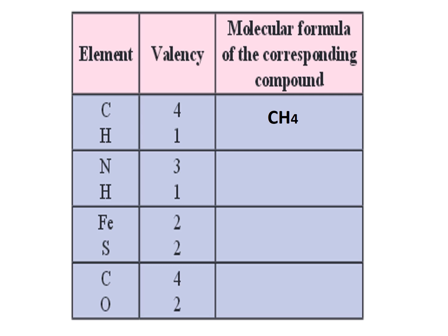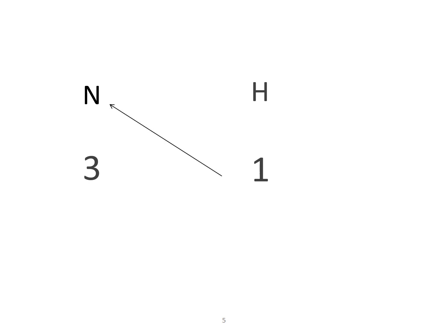The second example: we need to find out what will be the molecular formula of the compound which is made up of nitrogen and hydrogen. Valency of nitrogen is given as 3 and hydrogen as 1. So first we write the symbol: nitrogen is N, hydrogen is H. Below that we write the valency: 3 and 1. Then we cross multiply and get N1H3. Since 1 is not written, the formula becomes NH3. So NH3 is the formula. From this we understand that the valency of N is 3 and H is 1, because of the cross multiplication.